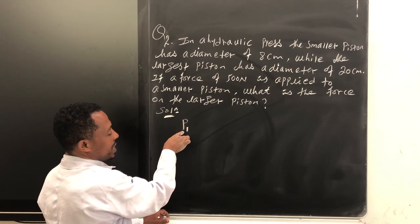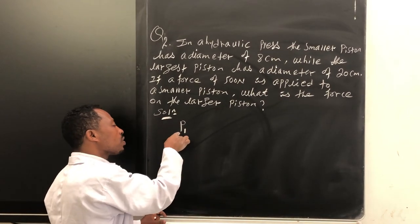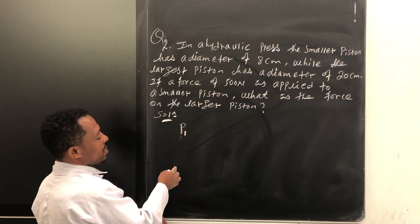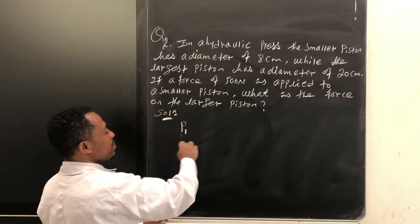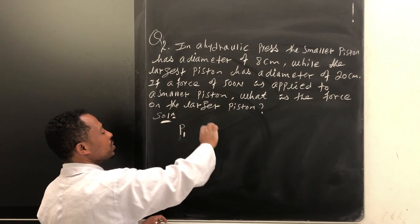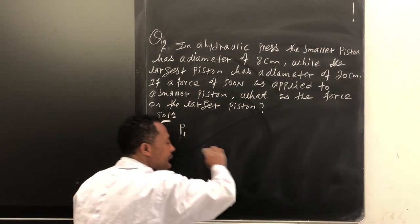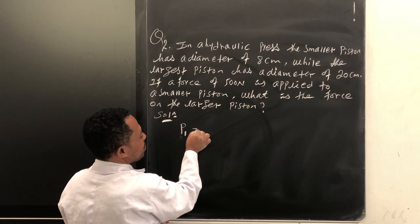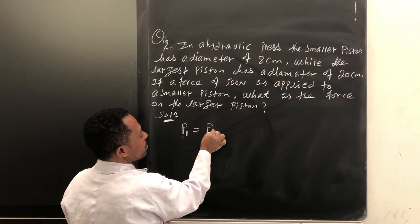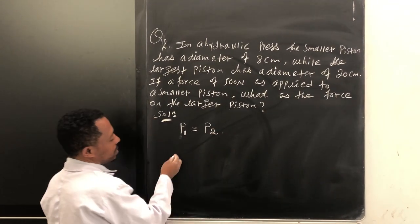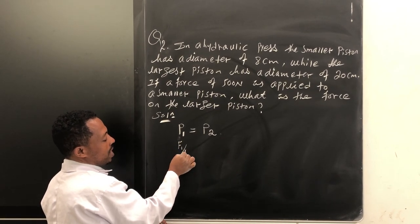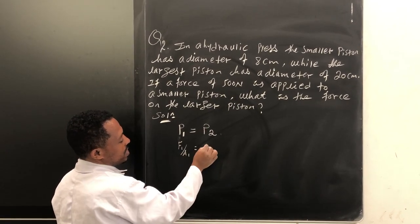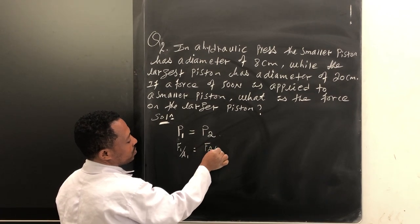the pressure created in one part of the piston. This pressure can disseminate throughout or through the entire route. That means, P1 is simply F1 over A1. P2 is simply F2 over A2.